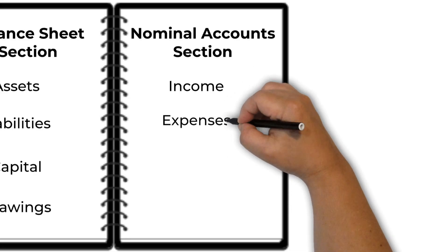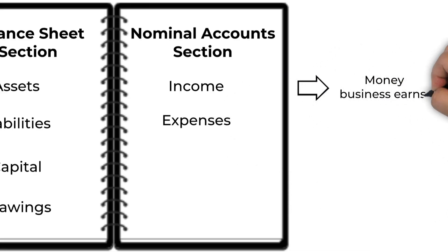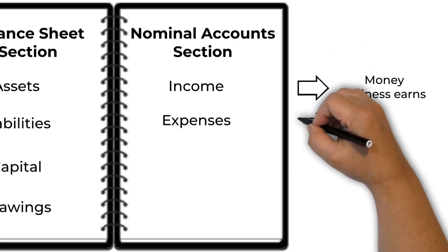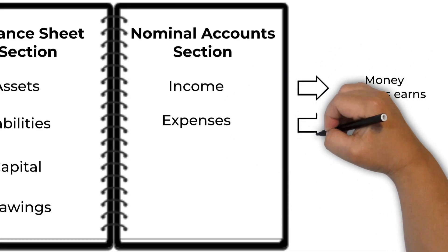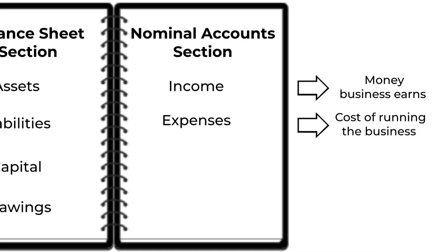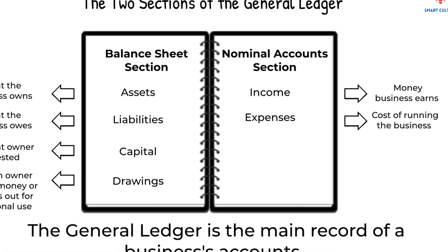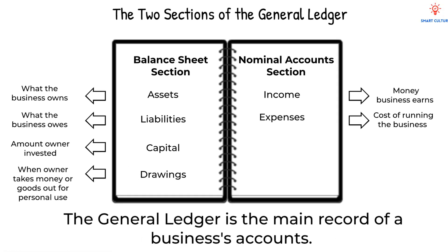The nominal account section contains accounts for income and expenses. Income is the money the business earns from sales or services. Expenses are the costs of running the business, like wages, rent, stationery, or water and electricity.